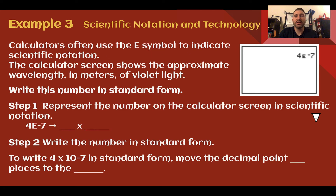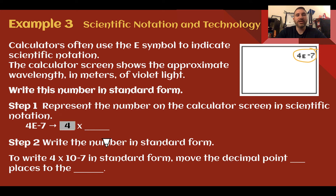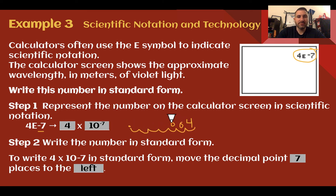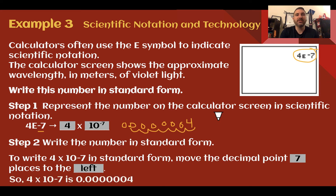Example 3: scientific notation and technology. Write this number in standard form — we have 4e negative 7 on the screen. That means 4 is our factor, the e is the times 10, and our exponent is negative 7, so 4 times 10 to the negative 7. To write this in standard form, take our factor 4 and move the decimal 7 places to the left: 1, 2, 3, 4, 5, 6, 7. Our decimal is here, all others filled with zeros, giving us 0.0000004.